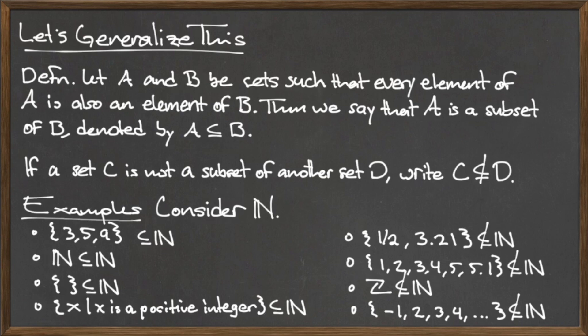Finally, let's make a brief note about the sets on the right, which we said are not subsets of the natural numbers. Remember, for a set to be a subset of another, every element in the subset must also be in the bigger set. Each of the sets on the right contain at least one element that is not in the natural numbers, which disqualifies them as being subsets.